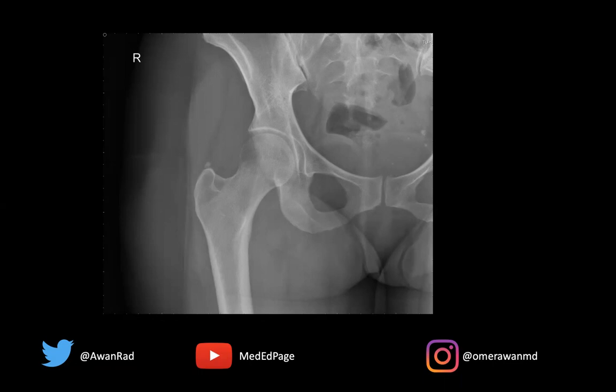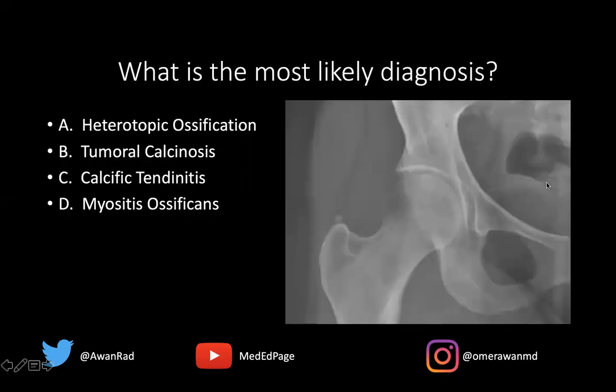Here we have a frontal view of the right hip, and there's an abnormality here which is not so subtle, but let's see if people get this question. What's the most likely diagnosis here? Is this a case of heterotopic ossification, tumoral calcinosis, calcific tendinitis, or myositis ossificans?